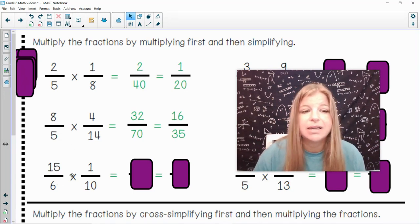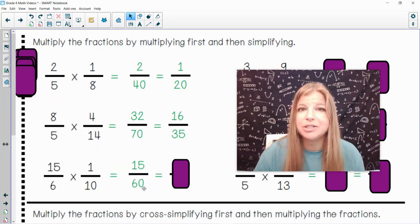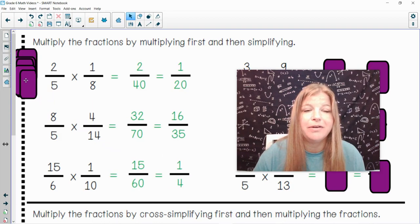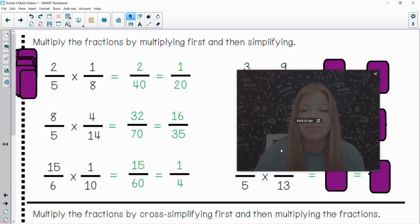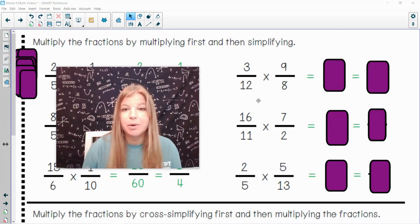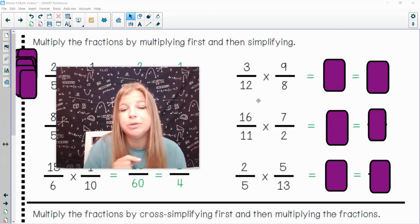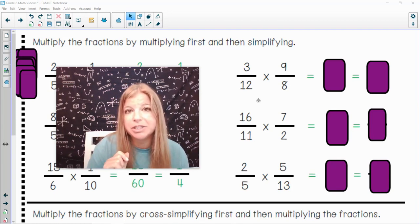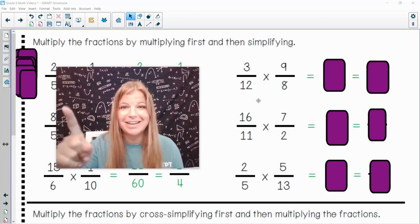15 6ths over 1 10th. So, 15 times 1 is 15. 6 times 10 is 60. 15 out of 60, you should think of like 15 minutes out of 60 minutes on the clock. I could divide them both by 15, and that would be 1 4th. Over here on the right, I'm going to give you a moment to pause. I want you to try these out. If you need to do a little side math for any of your multiplication, go for it, and then press play when you're ready to check your answers.